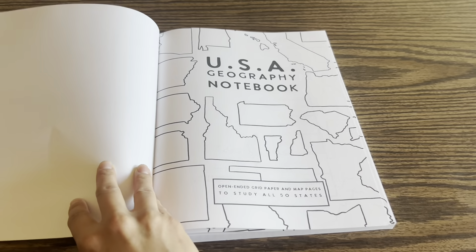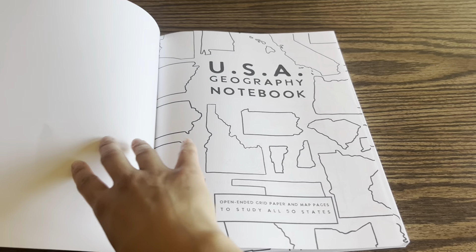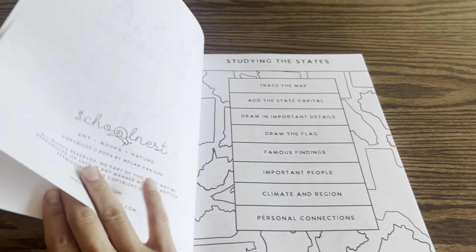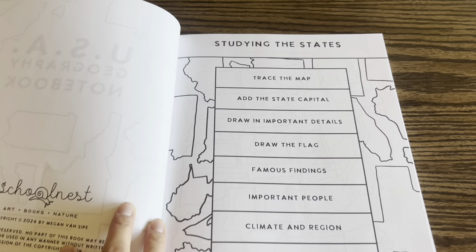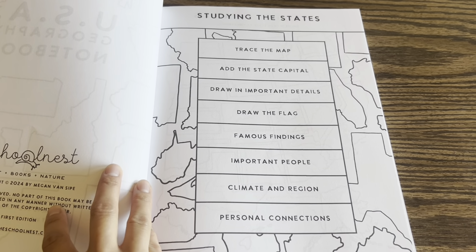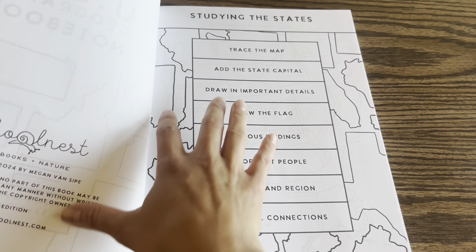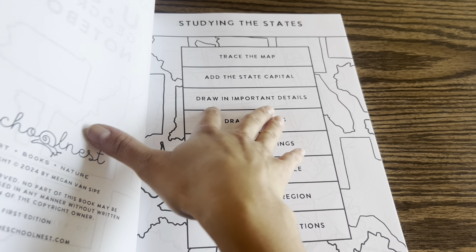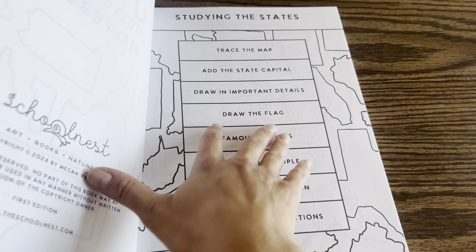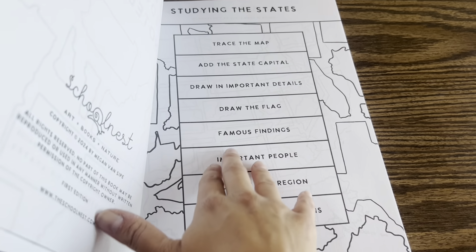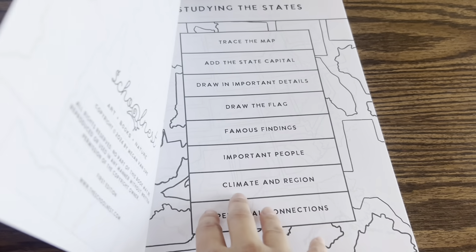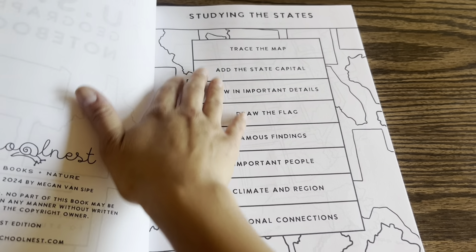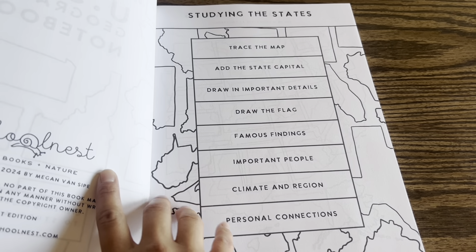As soon as you open to the first page, it's just the title page with a cute background of the outline of the states. Then there's a page called 'Studying the States' which lists the things you can do: trace the map at the state capitol, draw in important details, draw the flag, put in famous findings and important people, the climate and region, and personal connections. So there are so many things we can study about each state.